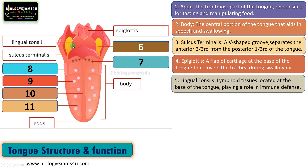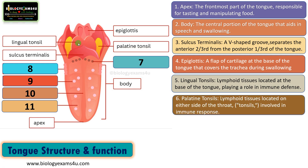The next structure is the palatine tonsil. The palatine tonsil is also a lymphoid tissue located on either side of the throat. It is commonly referred to as tonsils and is involved in immune response.